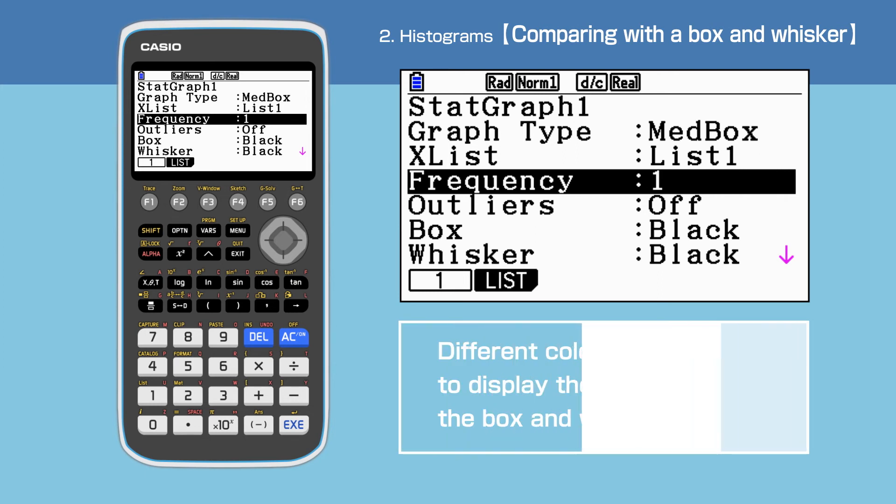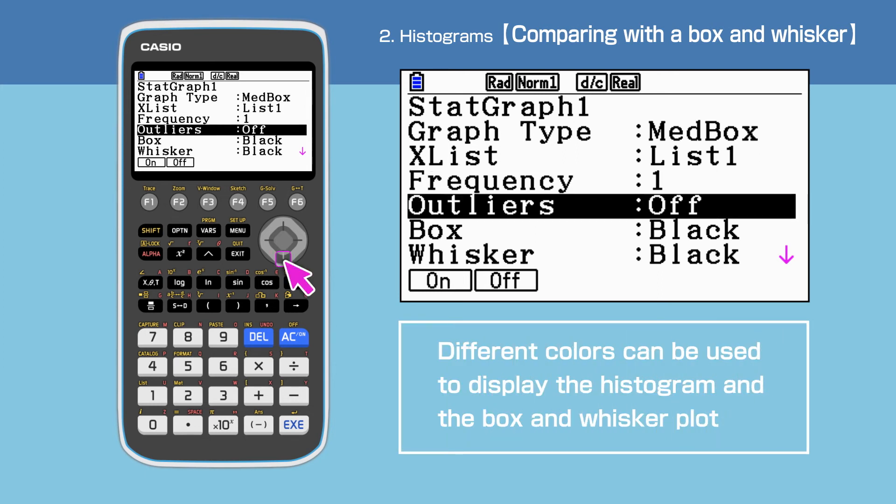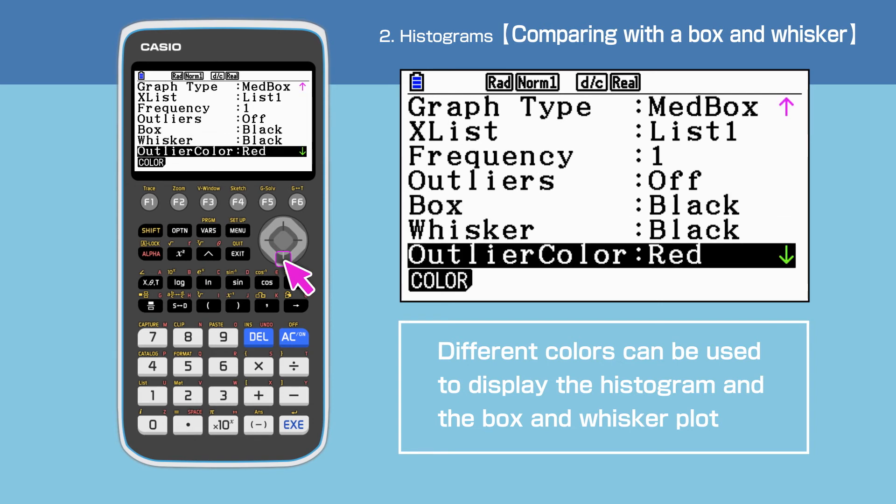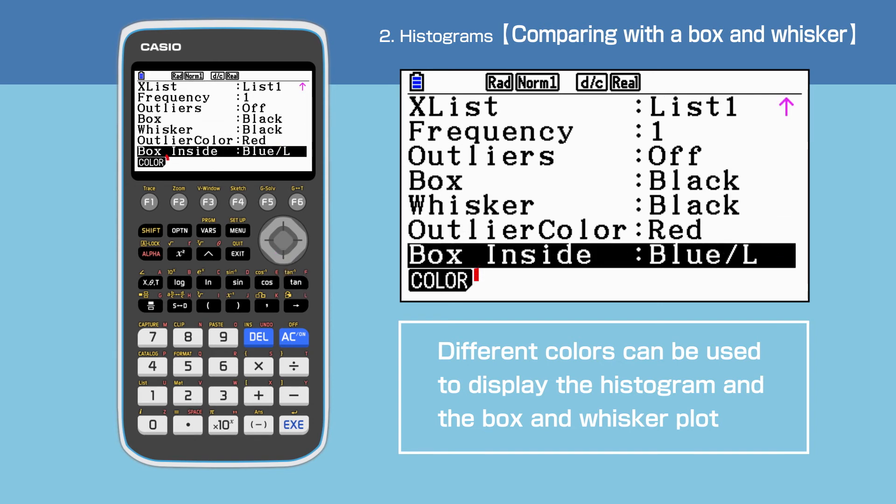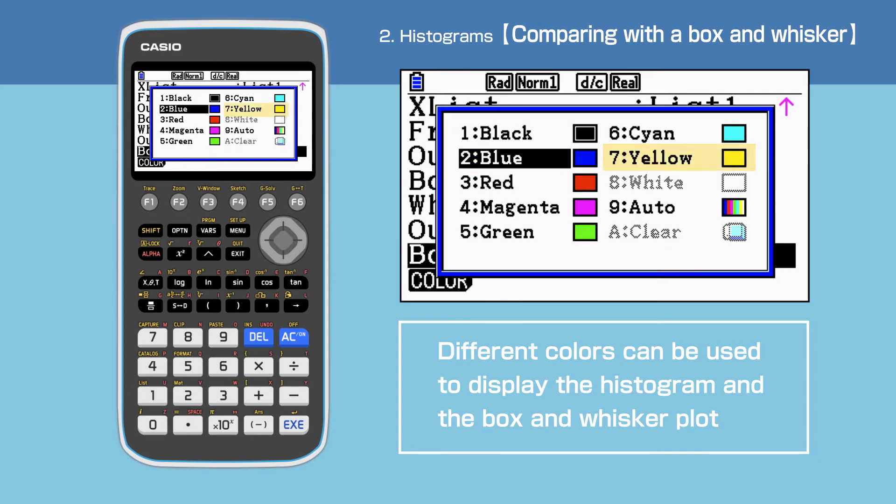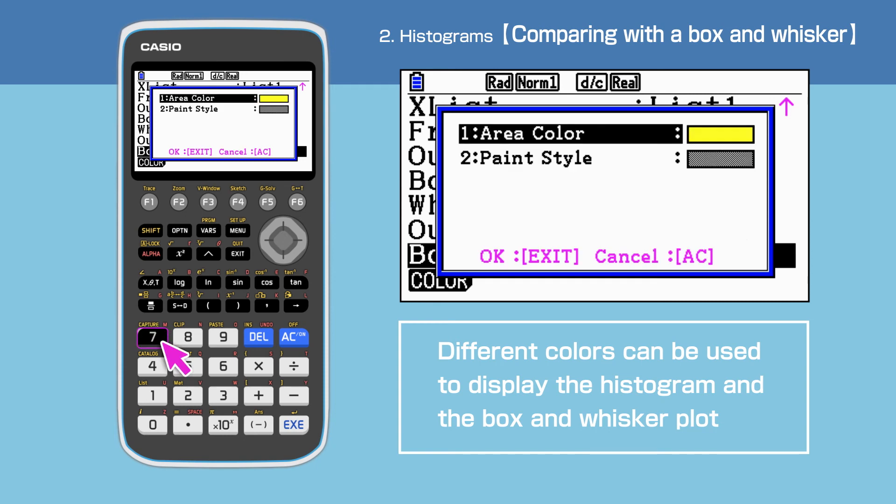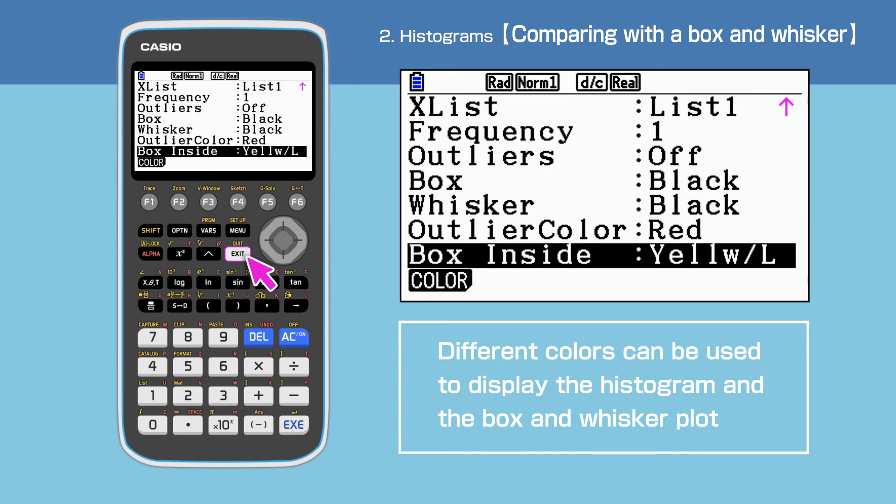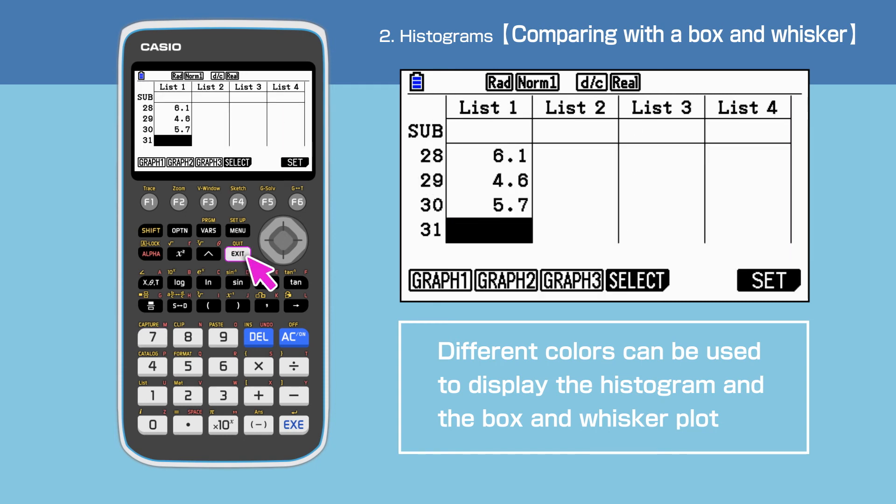We can change the color of the plot. For instance, let's change the color inside the box to yellow. Press exit when finished.